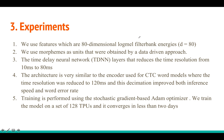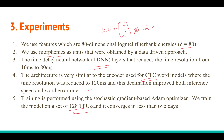For the experiments, the input features x_t are 80-dimensional log filter bank energy features. They use morphemes — a type of subword — as outputs rather than characters or full words. They use a time delay neural network to reduce the time resolution from 10 milliseconds to 80 milliseconds, which speeds up training and inference. They train using stochastic gradient descent on 128 TPUs, and the model converges within two days.